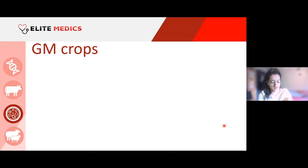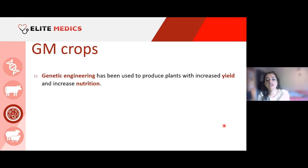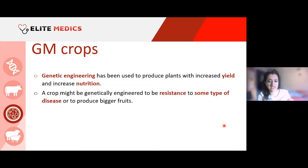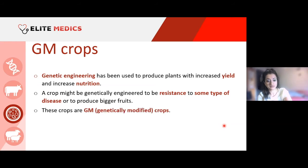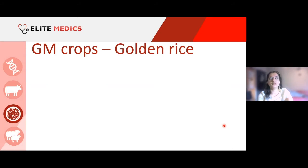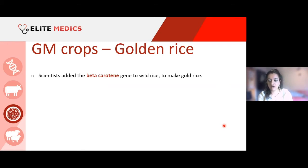Genetic modification isn't only limited to bacteria and the production of human products — it's also very much involved in genetically modifying crops. We can genetically engineer plants to produce increased yields and improved nutrition. A crop might be engineered to be resistant to disease or produce bigger fruits, both leading to maximum production. This brings us to the golden rice phenomenon.